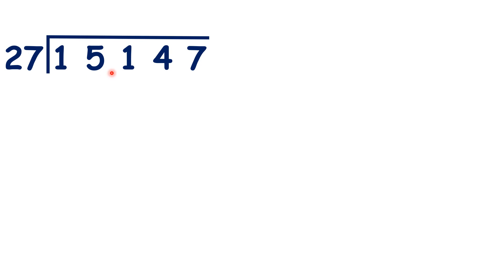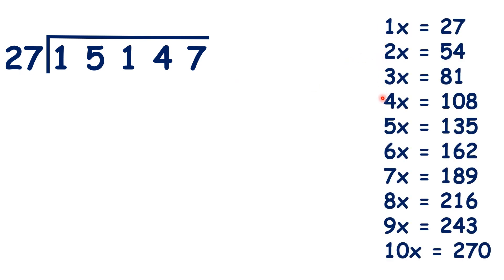Pause the video and see if you can use the same method to divide 15,147 by 27. So let's write out our 27 times table. If we take the first 2 digits, we have 15, which is less than 27. So let's take the first 3 digits all in one go, and work out 151 divided by 27.